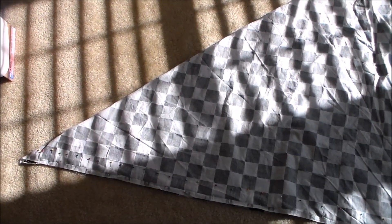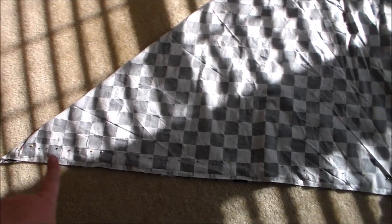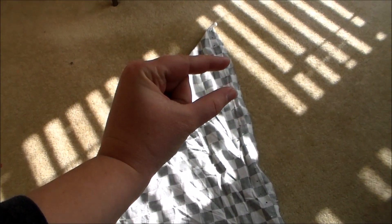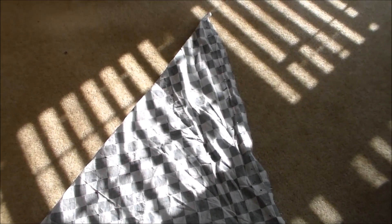Fold the fabric over and pin it in place. We're going to sew it together along the edge, leaving a space open to turn it right side out, and then continuing to the end.